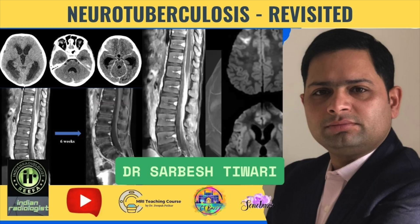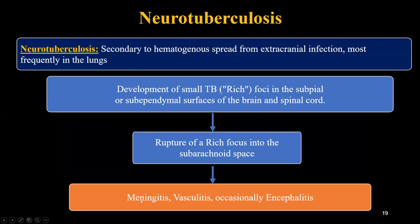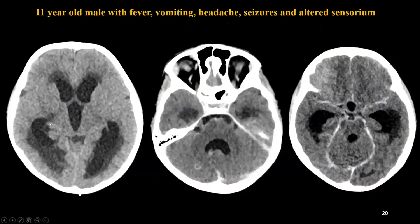Moving ahead with tuberculosis, we can have different pictures like meningitis, vasculitis, and occasionally encephalitis in patients presenting with CNS tuberculosis. We will start with a classical case example: an 11-year-old presenting with fever, vomiting, headache, seizure, altered sensorium.